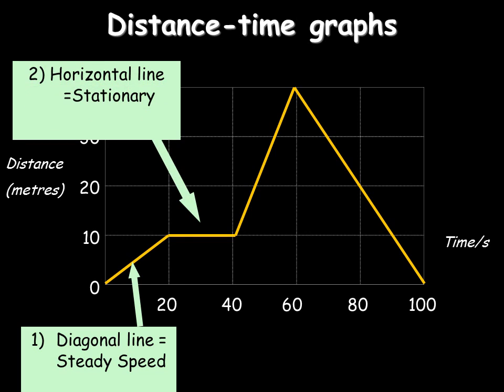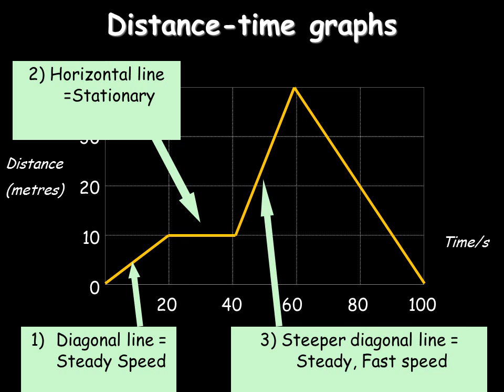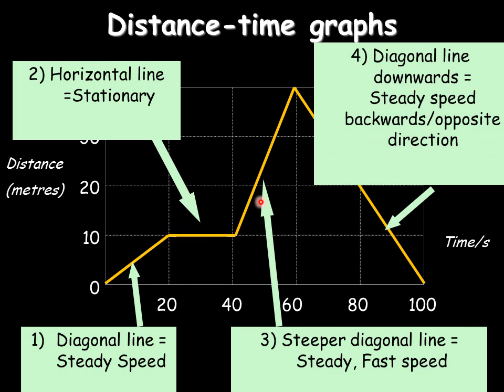The second section is a horizontal line. All horizontal lines will mean that it stays at the same distance, so here it's staying at 10 meters, so it's stationary. And then this next section here, you'll see the line is steeper, much steeper than the first line, so it means it's a much faster speed. And this last one, the diagonal line backwards, means that it's going at a steady speed still because it's a straight line, but it goes back to 0, so it returns back to its original position.